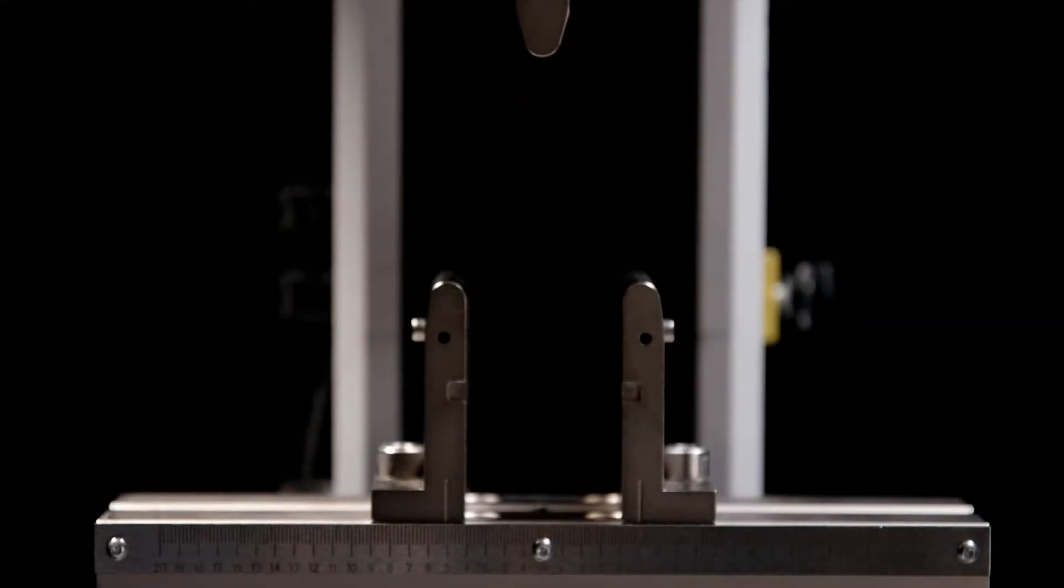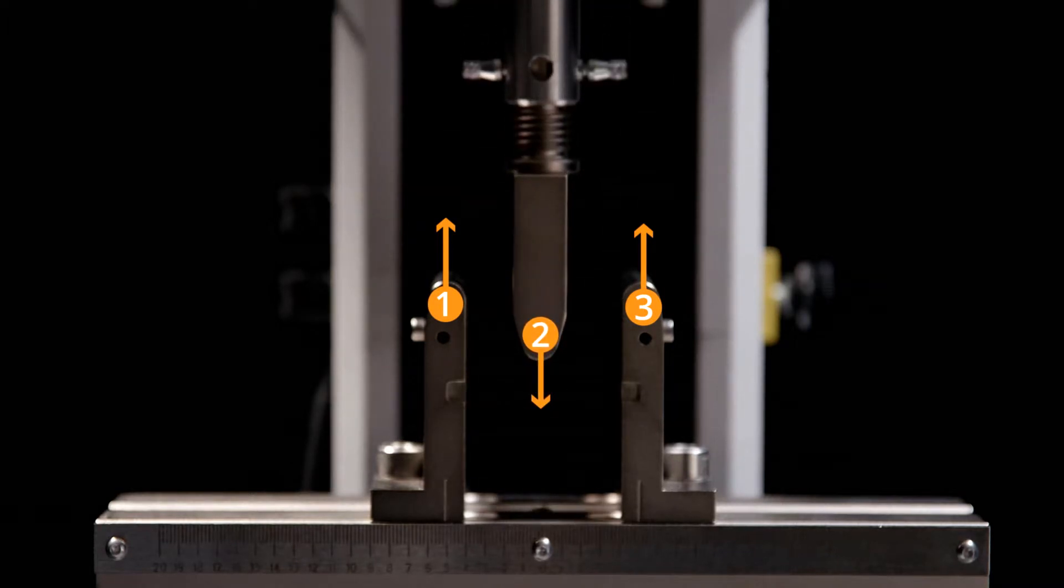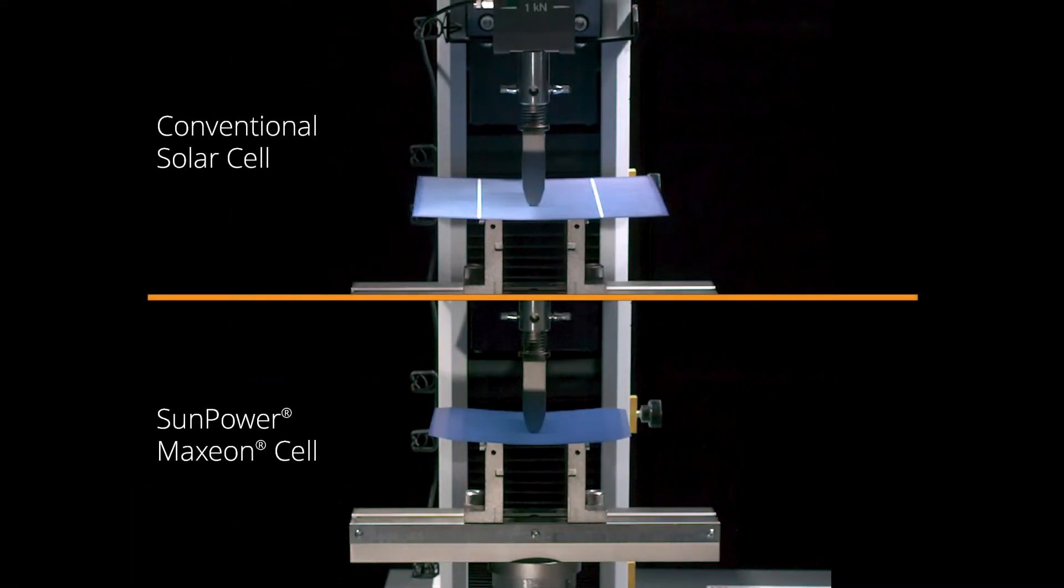A simple three-point bend test reveals how a cell will stand up to harsh conditions like those on your roof. Let's watch.